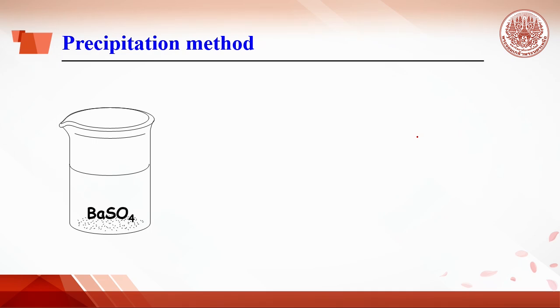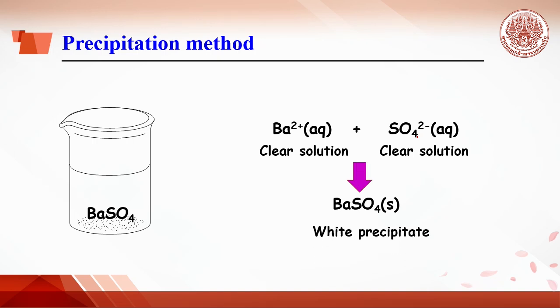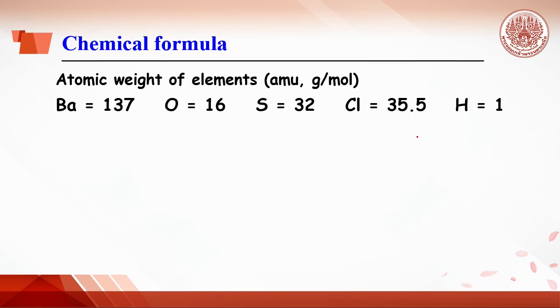Precipitation reactions start from barium ion and sulfate ion, which are clear solutions. Once these two solutions are mixed, white precipitate is clearly seen. What is the meaning of the chemical formula or what is the chemical formula hinted?